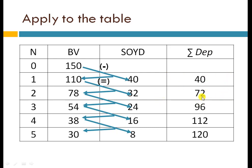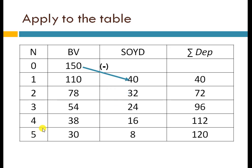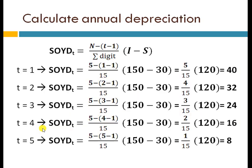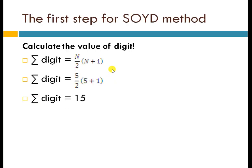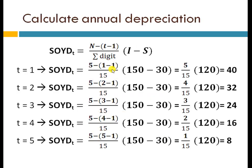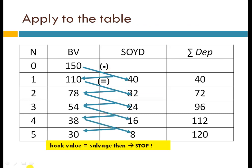The iteration stops when the book value equals the salvage value. According to this case, the salvage value is 30 million, so we stop the iteration at the stage where the book value equals 30, confirming the table is complete.